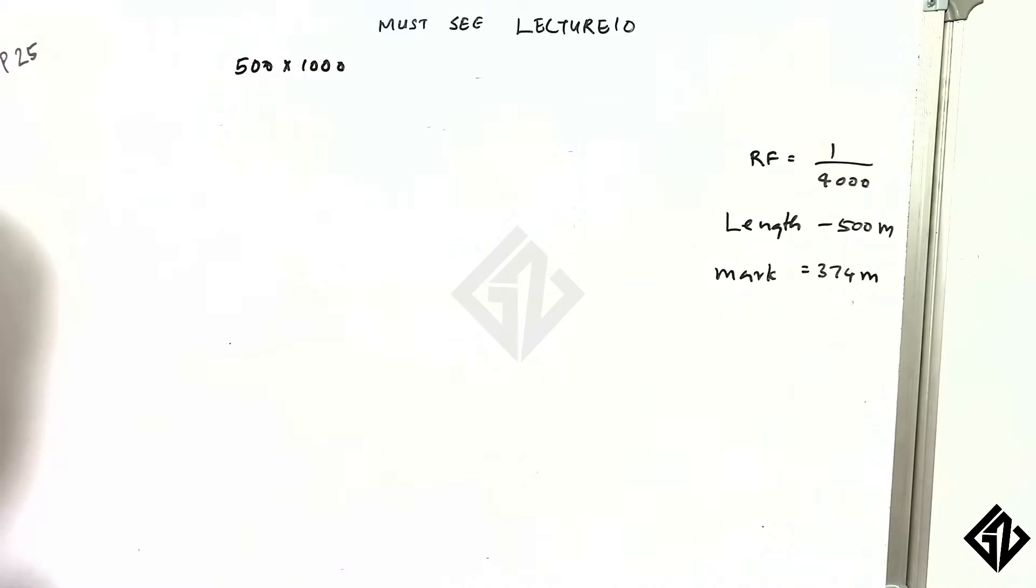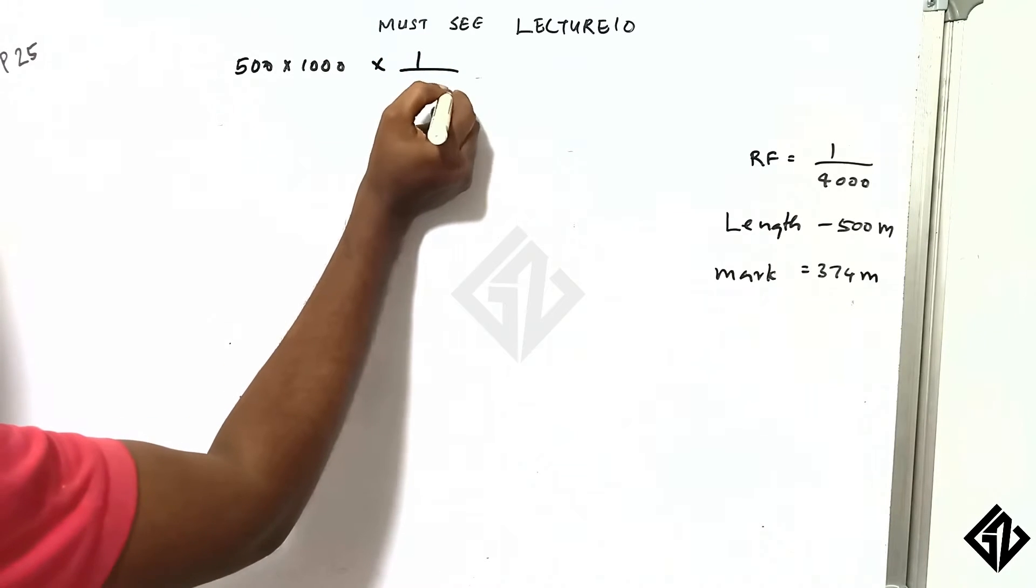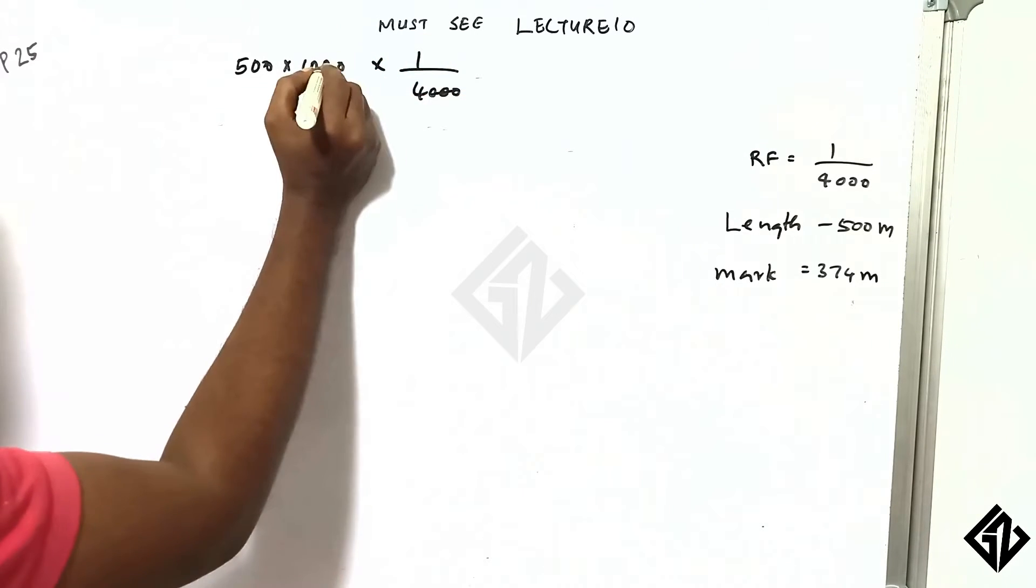Then, 50 times 1000 mm divided by 4000. Then, how many times?